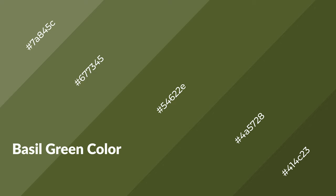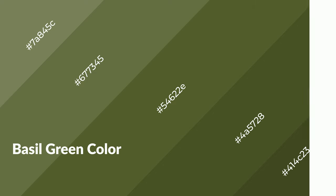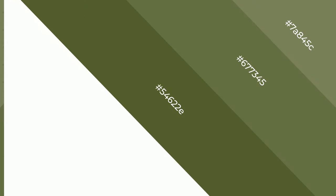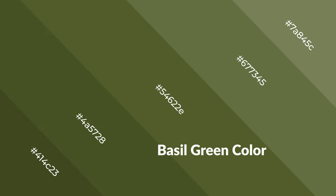Basil green is a warm color and it emits cozier and active emotions. Warm colors are symbols of warmth, fire, heat, and sunshine. It also evokes joy, passion, love, and even anger. You can see them used in restaurants and gyms.